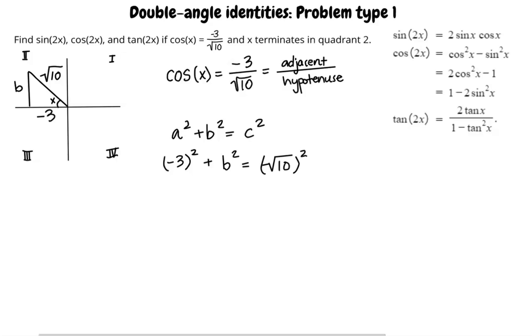Substituting these into the equation, we write negative 3 squared plus b squared equals square root of 10 squared. This simplifies to 9 plus b squared equals 10. Subtracting 9 from both sides, we write b squared equals 1. We can square root both sides and write b equals plus or minus square root of 1. Since the opposite side is above the x axis, the side is labeled with positive 1.